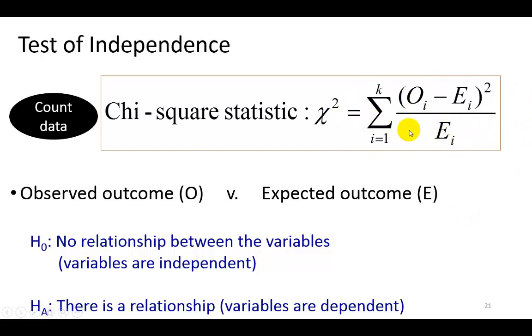If the observed distribution of outcomes is significantly different from the expected distribution, then we're going to reject the null hypothesis and conclude that the variables are related, which is what the alternative hypothesis indicates. Notice that if the variables are unrelated in the sense of the null hypothesis, then it means that they are independent, hence the term test of independence.